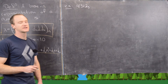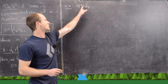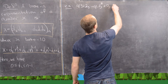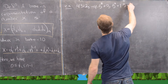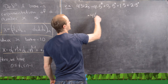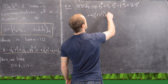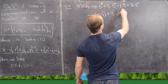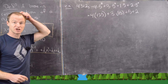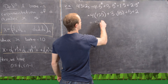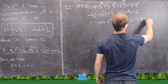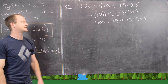For our next example, we want to look at 4312₅ in base 5. We have the 5 to the 0, 5 to the 1, 5-squared, and 5-cubed spots. So this is 4 times 5 cubed, plus 3 times 5 squared, plus 1 times 5 to the 1st, plus 2 times 5 to the 0. That's 4 times 125, plus 3 times 25, plus 5, plus 2 — which gives us 500 plus 75 plus 5 plus 2, so that's 582 when we convert from base 5 to base 10.